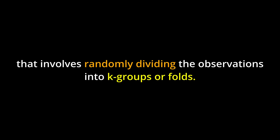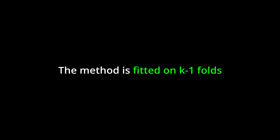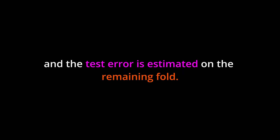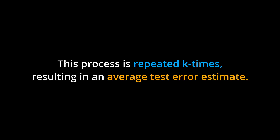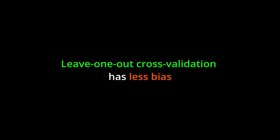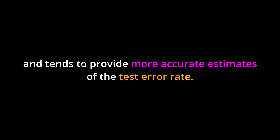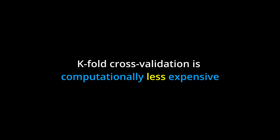K-fold cross-validation is an alternative that involves randomly dividing the observations into k groups or folds. The method is fitted on k minus one folds and the test error is estimated on the remaining fold. This process is repeated k times, resulting in an average test error estimate. Leave-one-out cross-validation has less bias compared to the validation set approach and tends to provide more accurate estimates of the test error rate.